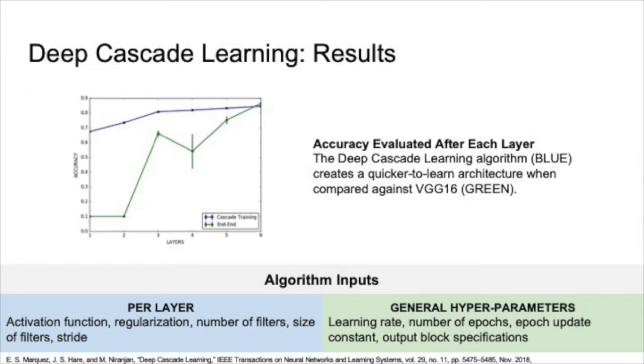DCL was compared with VGG16 on the CIFAR-10 dataset. This plot shows the accuracy obtained from each successive layer for the two architectures. While DCL has success with early layers, the gains from adding more layers diminish.